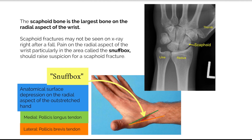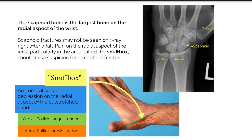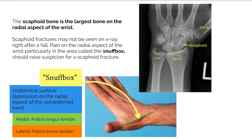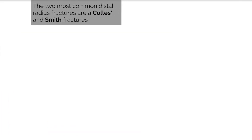The borders of the snuff box include the tendons of the extensor pollicis longus on the medial side and the tendons of the extensor pollicis brevis as well as abductor pollicis longus on the lateral side. The floor of the snuff box is made of the trapezium and scaphoid bones. The snuff box contains branches of the radial artery, superficial branches of the radial nerve, and the cephalic vein. The two most common distal radius fractures are a Colles and Smith fracture.